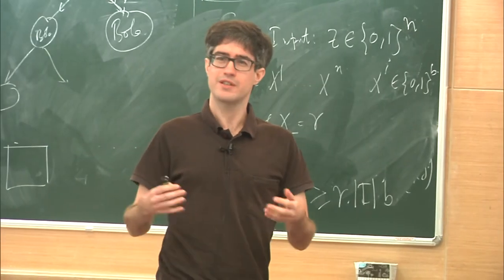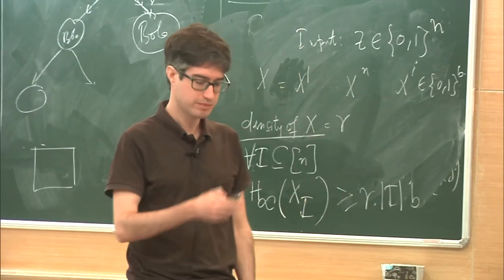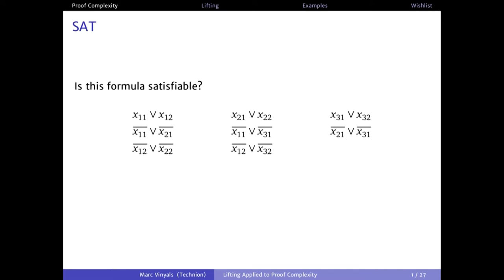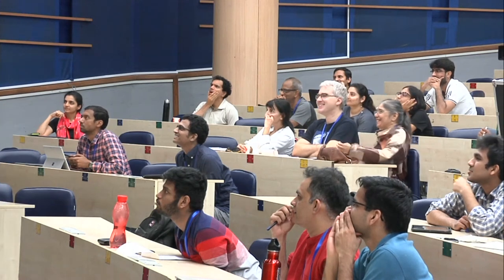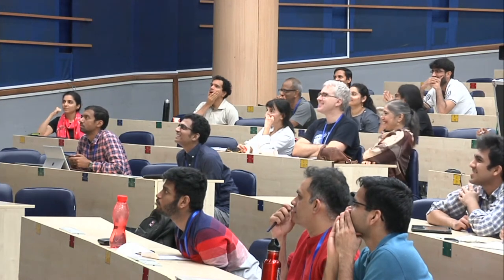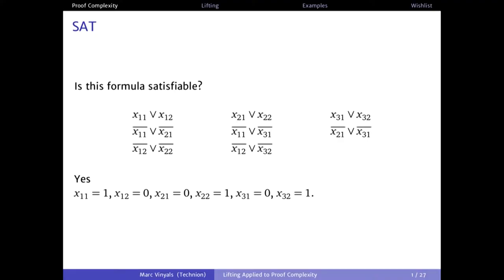Let's start by talking about proof complexity. Just an easy question: is this formula over here satisfiable? Yes, it is satisfiable. Why is that? Well, here's a satisfying assignment. Just check these six variables — take each of these clauses and you will find that this assignment satisfies these clauses.